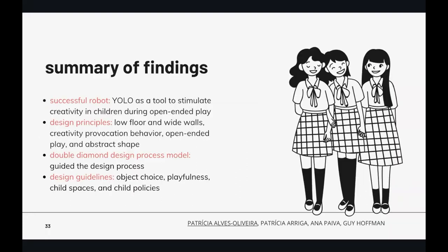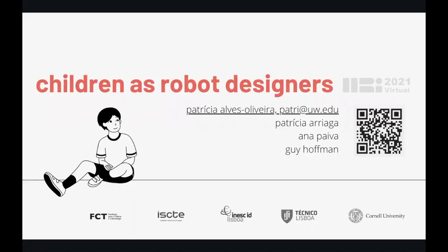As a summary, I talked about a successful robot design project in which we followed design principles to design the YOLO robot. We used the double diamond process which guided the design, and we provided guidelines for child-robot design extracted from the lessons we learned. Thank you so much for listening. Check out the paper for more details and send me an email if you're interested in this topic.